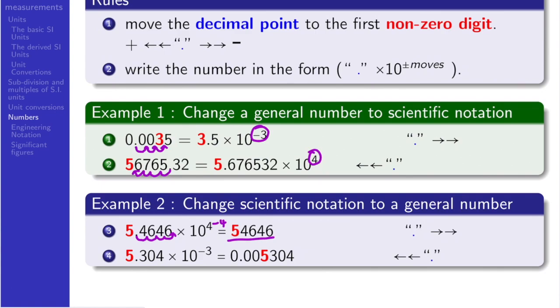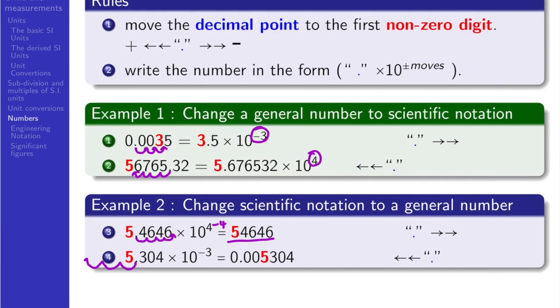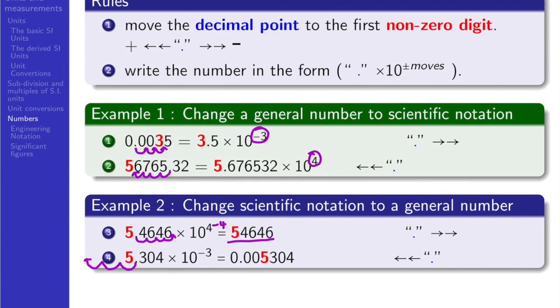In the second example, we've got 5.304 times 10 to the power minus 3. Minus 3 simply says that the comma has been moved to the right three times. Therefore, all we need to do is to reverse it three times to the left so that we get a positive 3, canceling down the negative 3. And we will then get 0.005304.